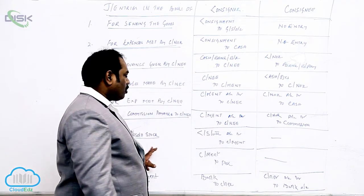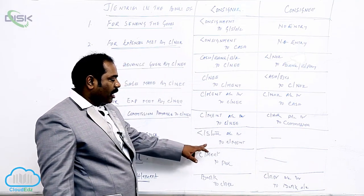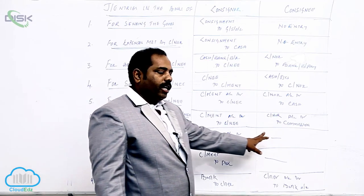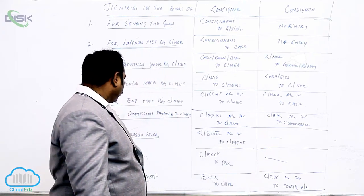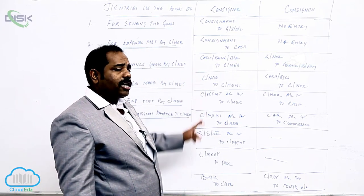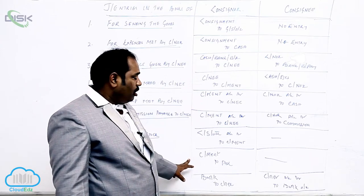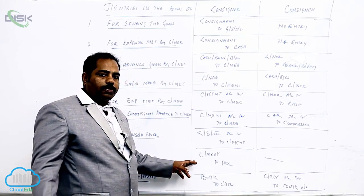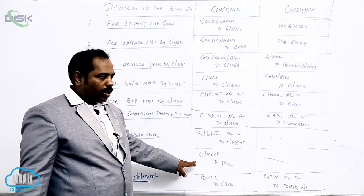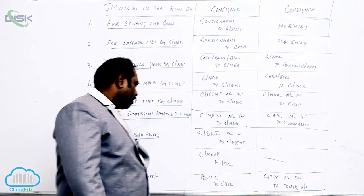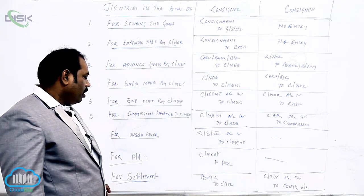Seventh: for unsold stock, the entry is consignment stock Dr. to consignment, in the books of consigner. In the consignee's books, there is no entry. For profit or loss: the profit or loss belongs to the consigner, not to the consignee, so there is no entry in the books of consignee.